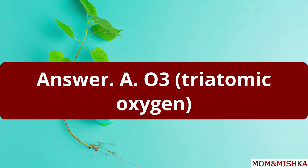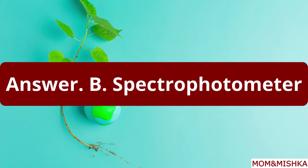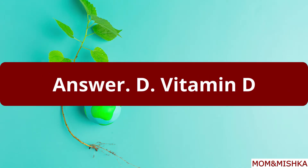What is the molecular formula of ozone? It is O3, triatomic oxygen. Option A. Which of the following devices can be used to measure ozone in the stratosphere from the ground? Option B: spectrophotometer.